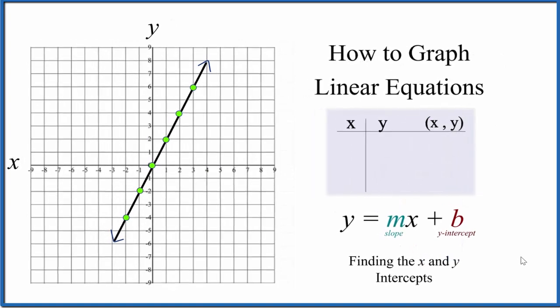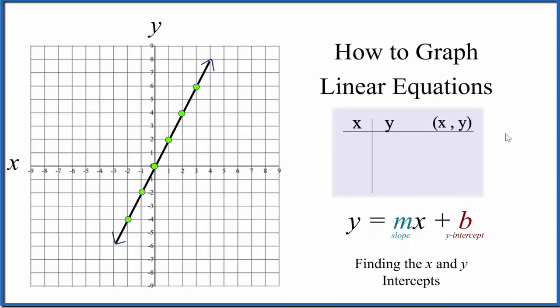So those are three techniques we can use to graph linear equations. We can put values in a table and plot those. We can use slope-intercept formula. Or we can set x and y equal to 0, find those intercepts, and graph the equation that way. They all give the same graph, just different ways to do it.